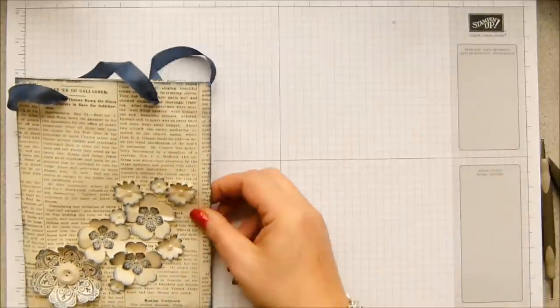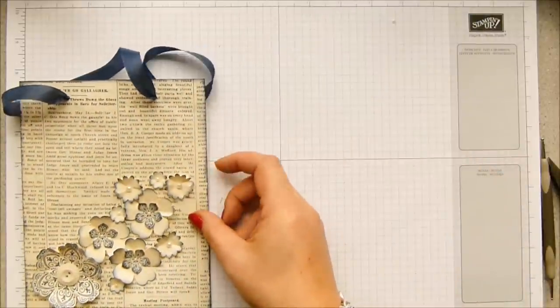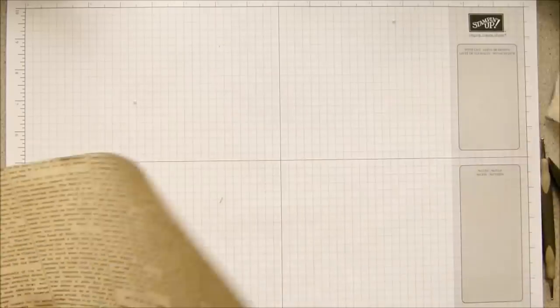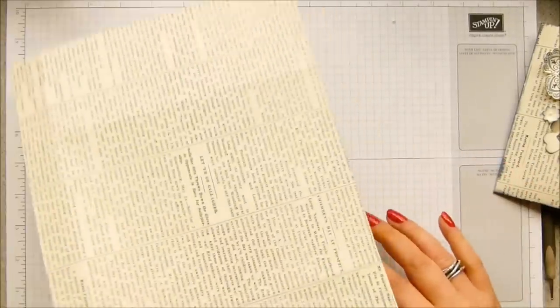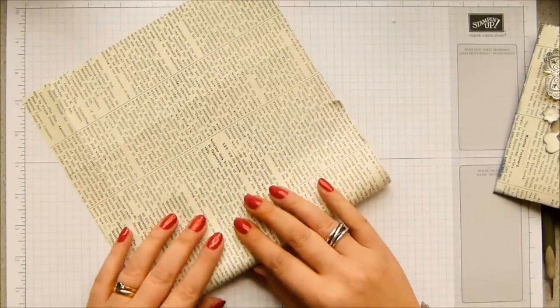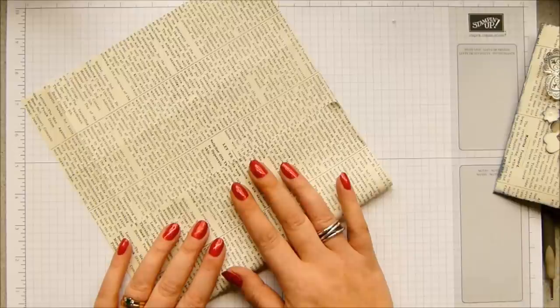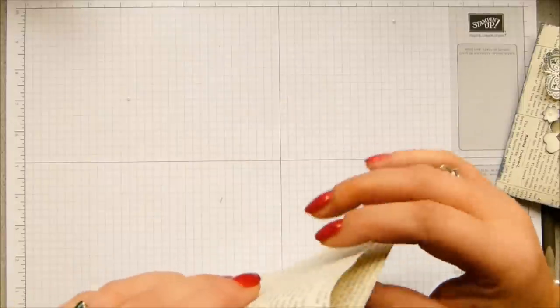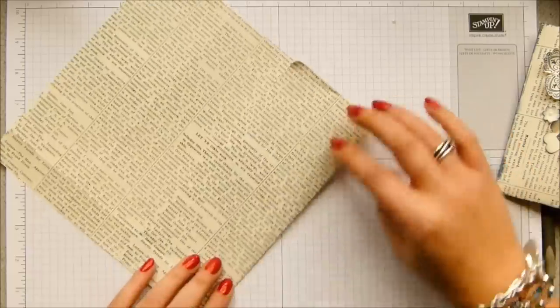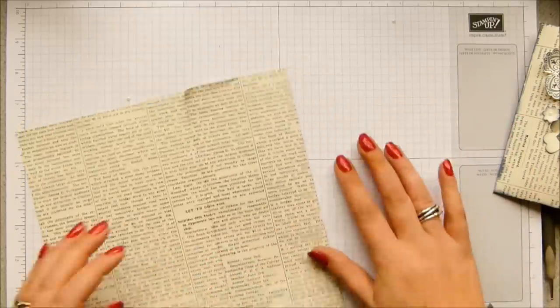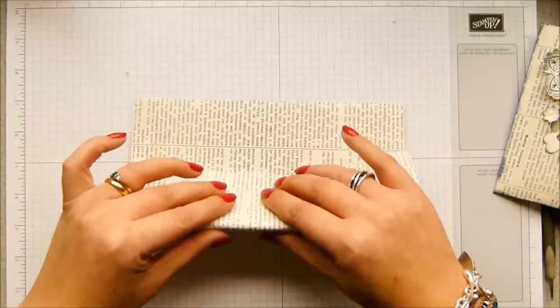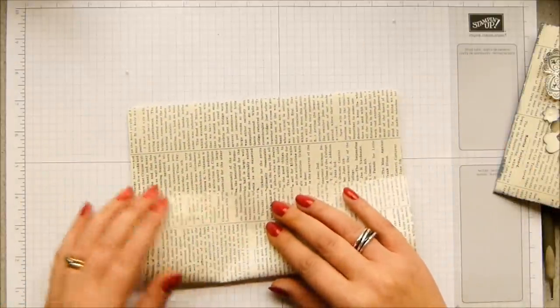I can't remember what my finished dimensions of the bag are. Let's have a look. Five and three quarters by seven and a half inches. Oh, I don't know what that is. I'm going to say 19 centimetres by, I don't know. I shall make sure I've got it written on my blog. That's why I folded over. I'm just looking for my score lines because I didn't push hard. I've got to hunt them down.